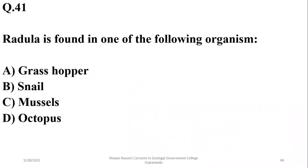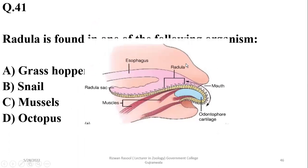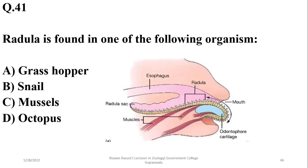This feature is found in one of the following organisms. As discussed in previous videos, it is a Mollusca feature — the snail can have a rasping structure that helps in the feeding process. So the right option is beta.